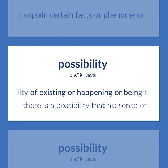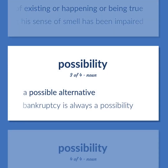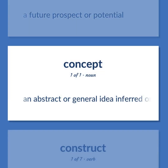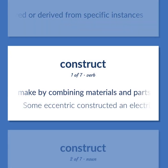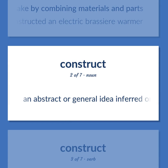Capability of existing or happening or being true. There is a possibility that his sense of smell has been impaired. An abstract or general idea inferred or derived from specific instances. Some eccentric constructed an electric brassiere warmer.